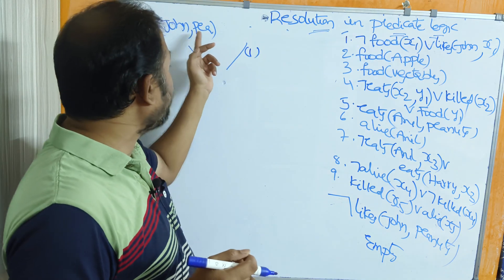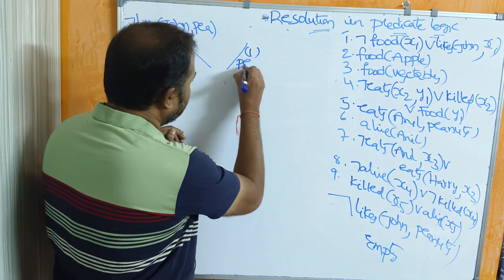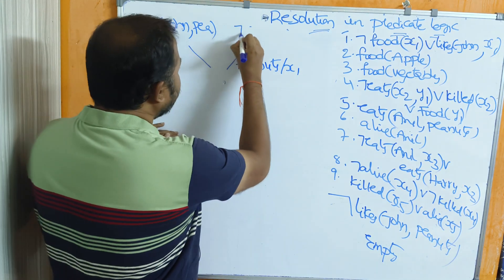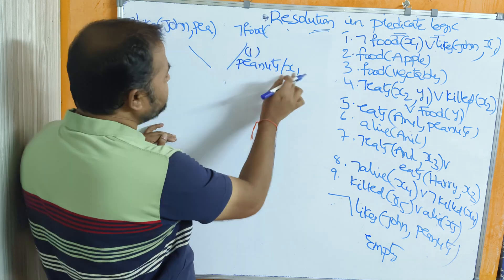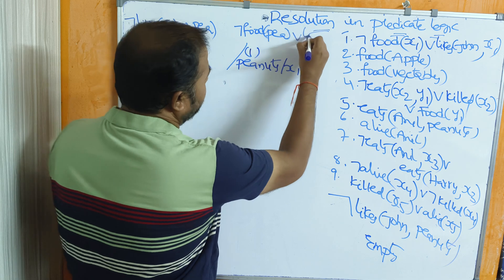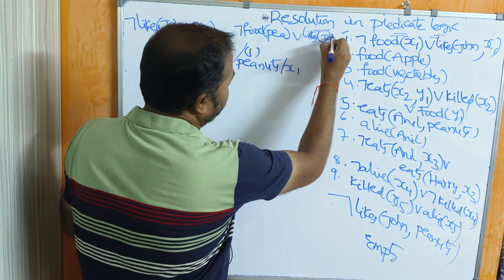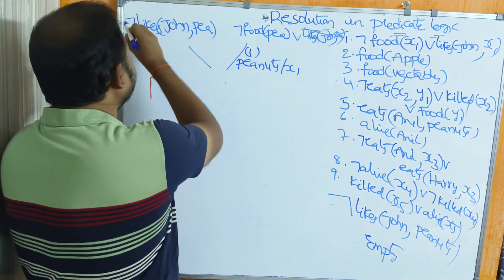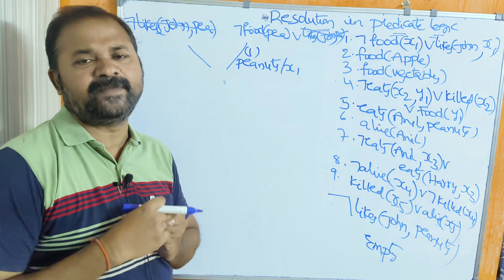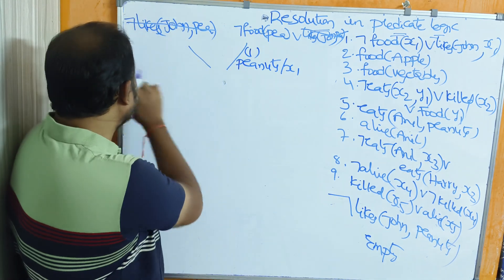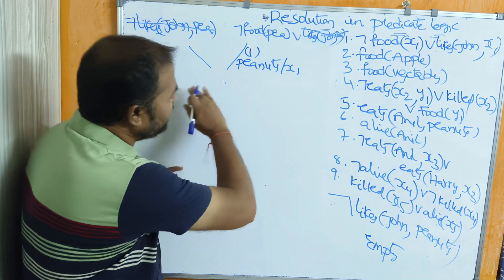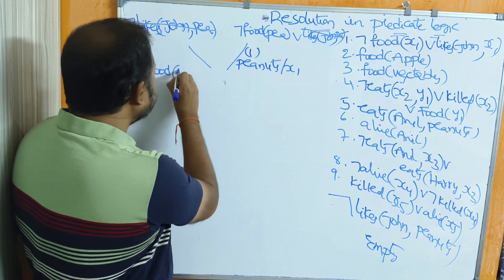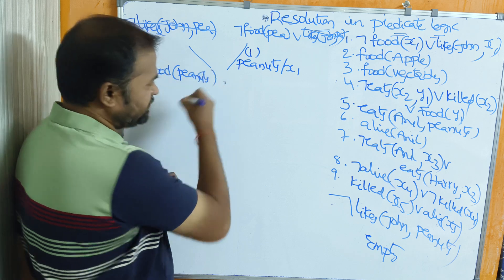Substituting x1 with peanuts gives: negation food(peanuts) or likes(john, peanuts). The likes(john, peanuts) and negation likes(john, peanuts) cancel each other. The result after cancellation is negation food(peanuts).